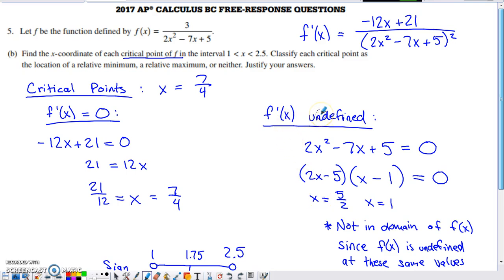When is f prime of x undefined? So that's only going to be when the denominator is equal to 0. So when is the quantity that's being squared within that denominator equal to 0? Well, if you solve that by factoring, you get 5 halves and you get 1.